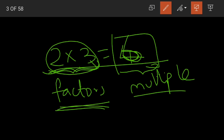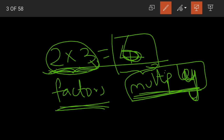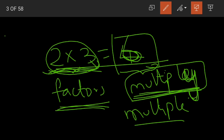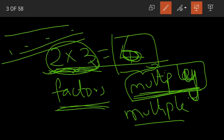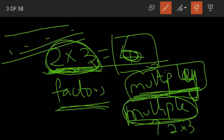Don't get confused between factor and multiple. Multiple is similar to the word multiply. When we multiply numbers, we get our multiple. Multiple means more than one — like a multiple choice question where 4 answers are given. So when you multiply multiple numbers together, we get our multiple.